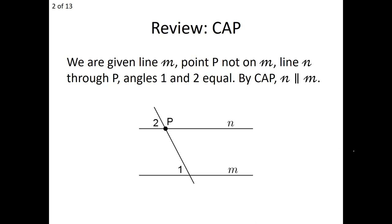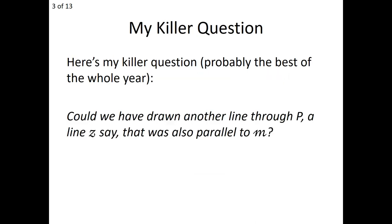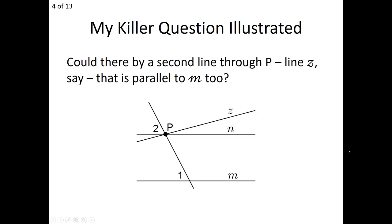Now, could we have drawn another line through point P — let's say line Z — that is also parallel to line M? In the last diagram, we saw a line cutting through lines M and N, with one of the lines passing through point P. The question is: can I draw a second line through point P that is also parallel to line M? Can I draw this second line Z such that it is also parallel to line M?